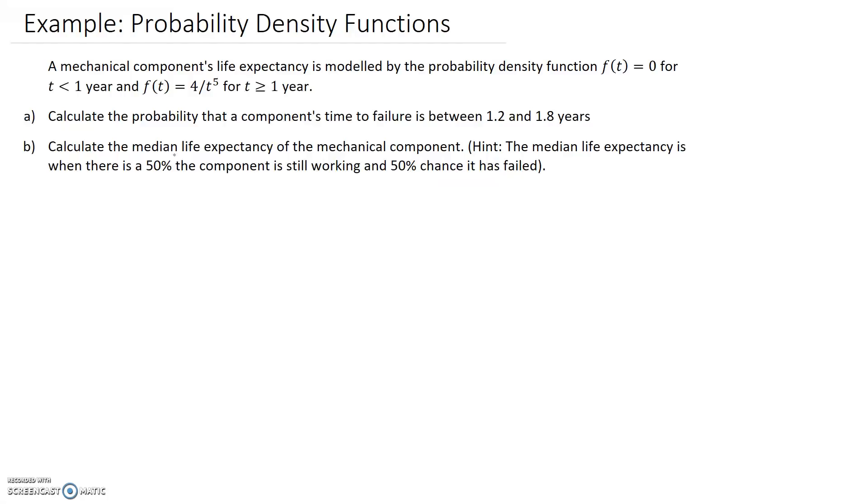To start this off I'm going to try and sketch the probability density function. We can write it as a piecewise function with f of t, and it has two pieces. One of them is that f of t is zero, and that was for when t is less than one, and the other part is this, when t is greater than one.